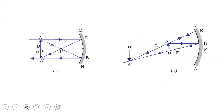When the object is placed at C, the reflected rays meet at point C itself. The image is real, inverted, and the same size as the object. When the object is placed between C and F, the image is formed beyond C. The image is real, inverted, and enlarged.